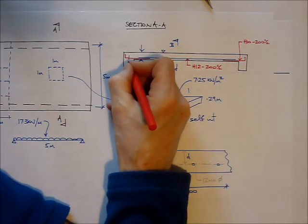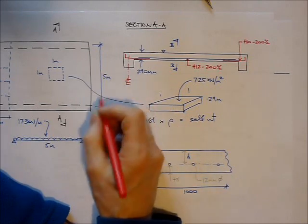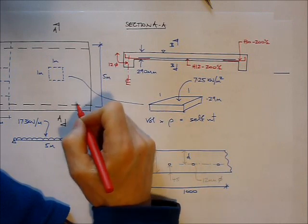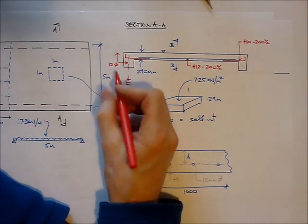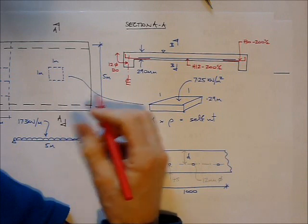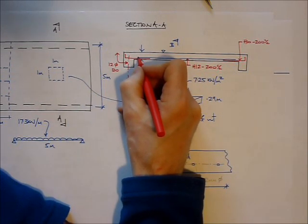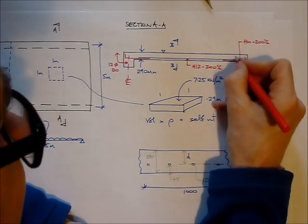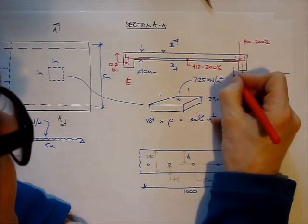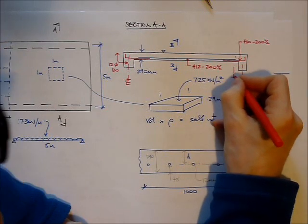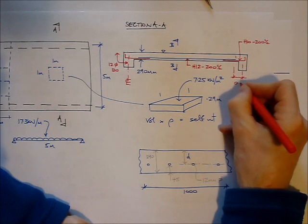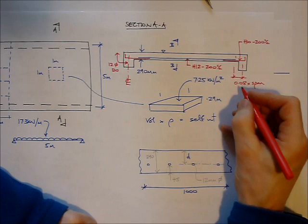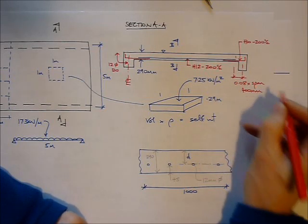I need to make sure that my bars have a reasonable anchorage beyond the center line of the support, and that anchorage has to be 12 diameters. In this case, 12 diameters is 120 millimeters. I have to make sure that my main bars run to reasonably close to the support. In fact, I have to stop them off at 0.08 times the span, which in this case is 5 meters. So I can stop them off at 400mm from the center line of the support.